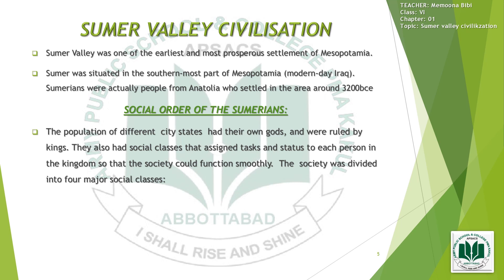Social order of the Sumerians: the population of different city-states had their own gods, as they were polytheists, and were ruled by kings. They also had social classes that assigned tasks and status to each person in the kingdom so that the society could function smoothly. Sumerian society was divided into four major social classes: nobles, commoners, clients, and slaves.